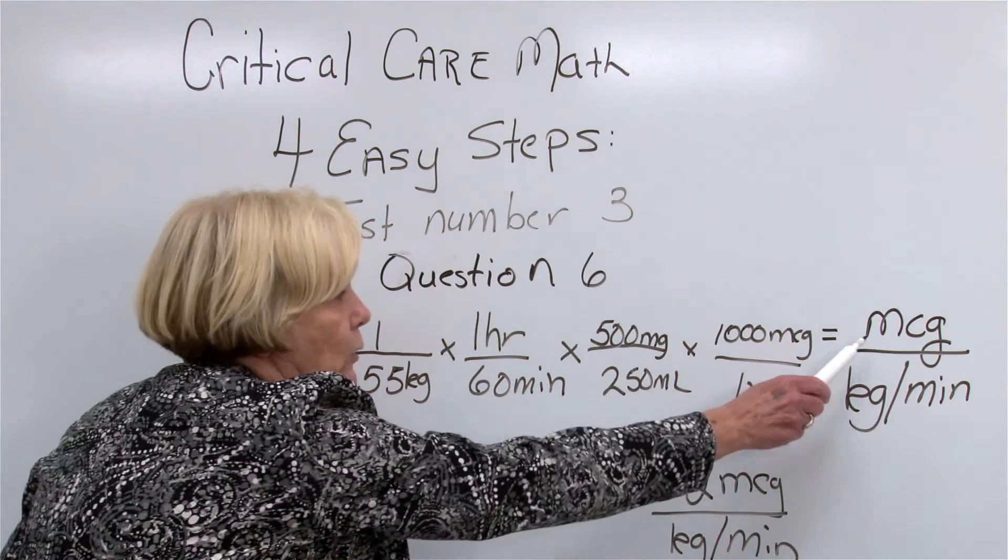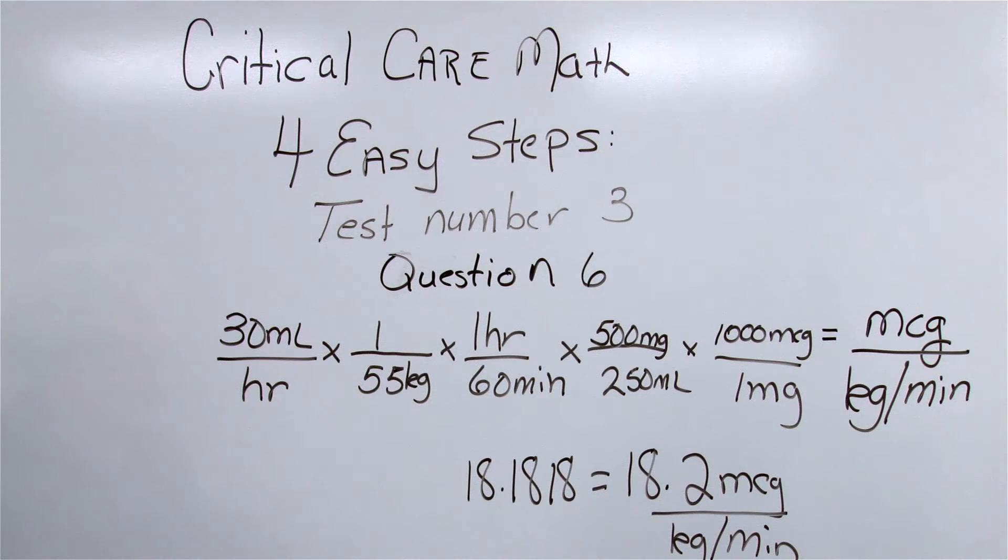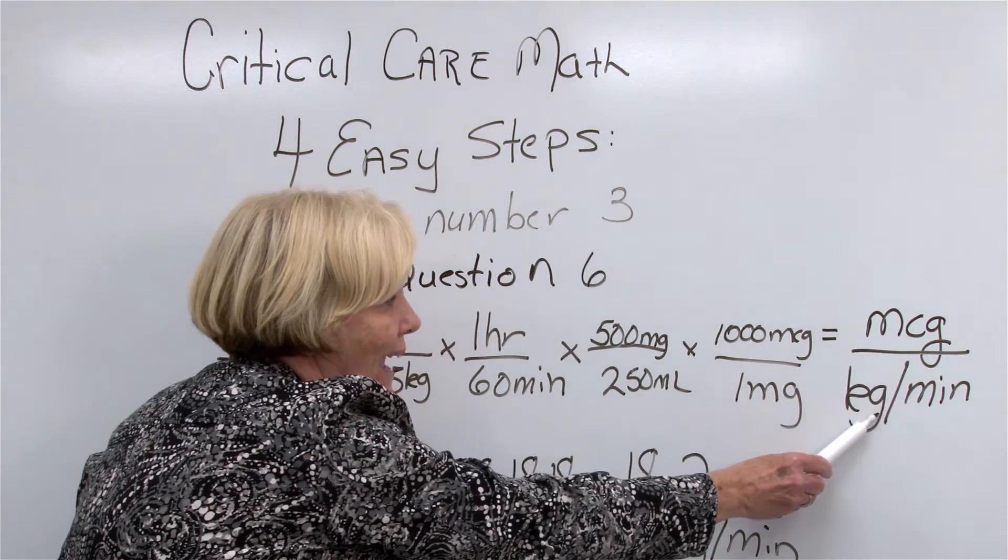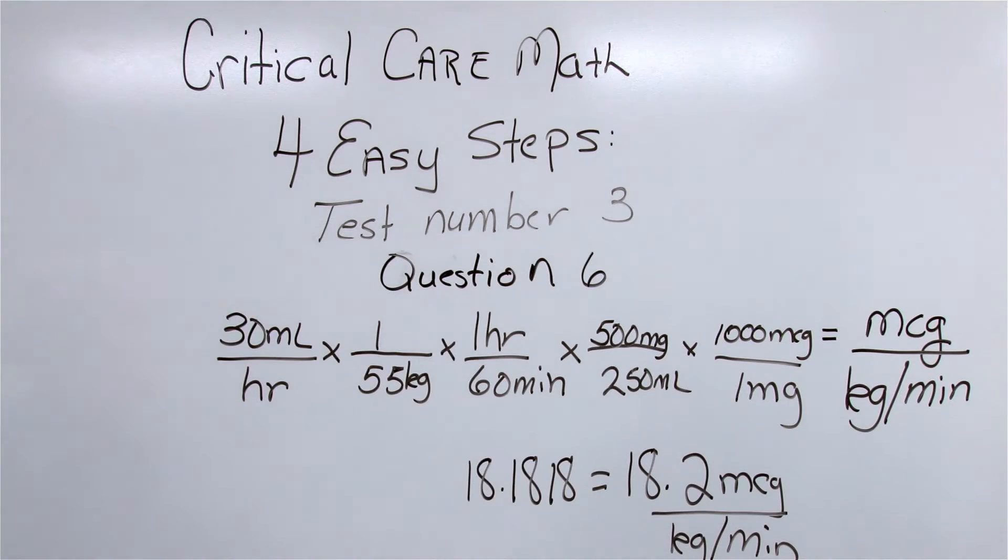Now this is really important: just like if you have more than one word in an order, if you have more than one word in your answer, first word goes on top, everything else goes on the bottom. And that's the way the words must be in the problem to get it to balance. So let's start with what our amount over time is in this problem. Down towards the very end of the problem, they told me that the pump was set at 30 mils over one hour, so I'm going to start with my amount over time.